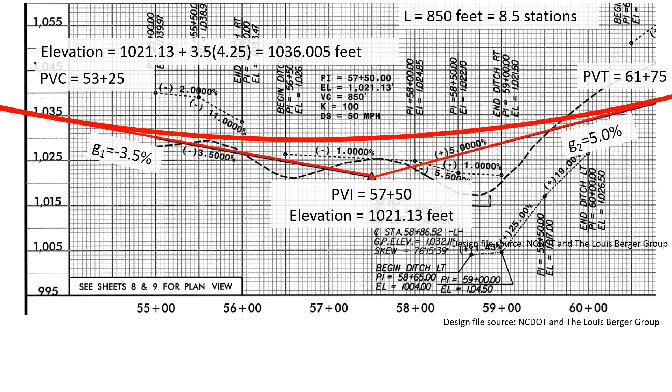We can also determine the station of the PVT by adding half the length to the station of the PVI. So that station is 61 plus 75.